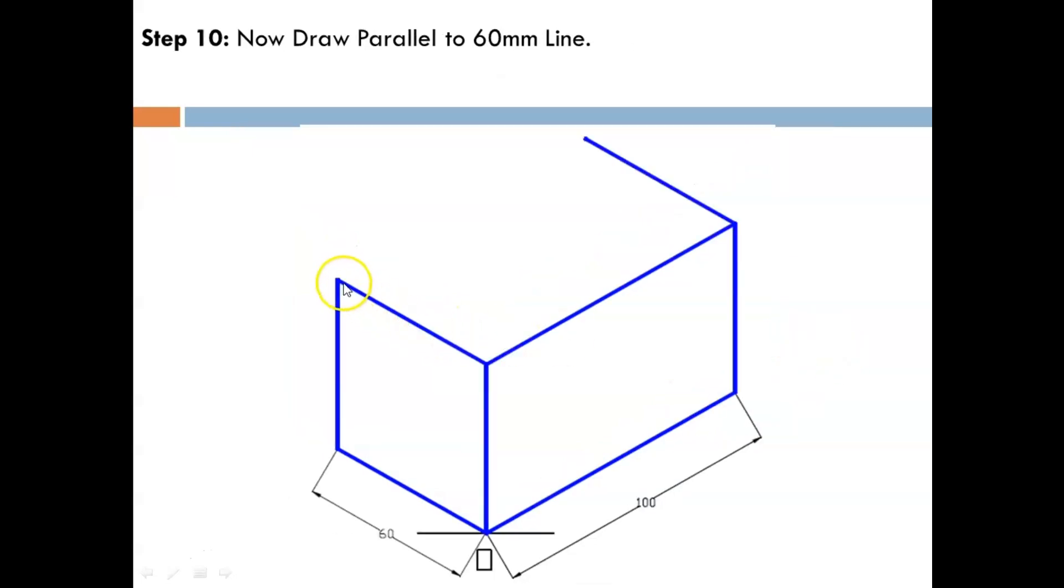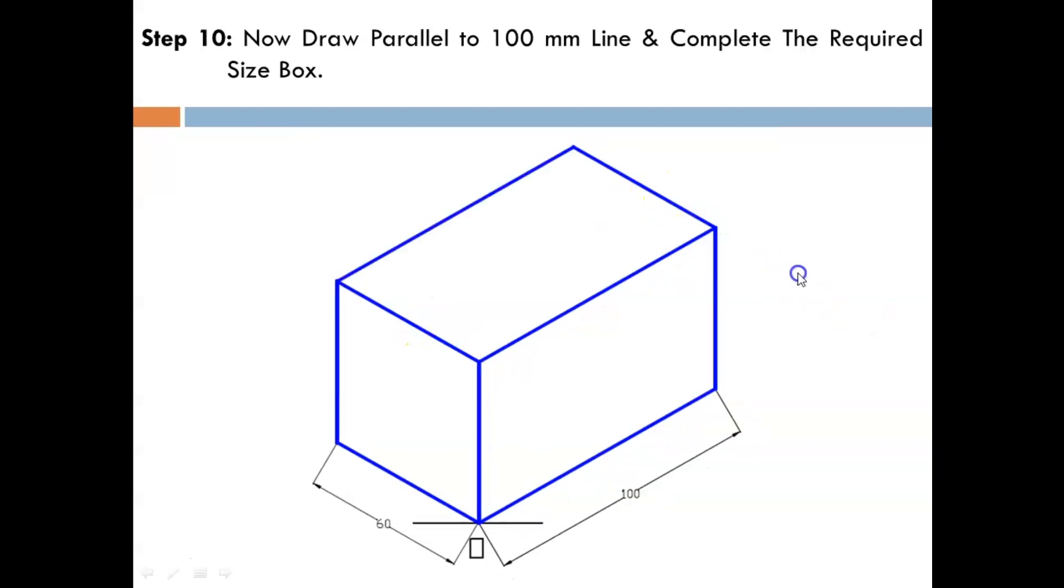Now draw parallel to this 60 mm through this intersection with the same length. Then at the end, again parallel to the 100 mm line by joining these two end points. This is how you can complete the required box in isometric drawing. I hope the idea is very clear to you. Thank you, thanks a lot.